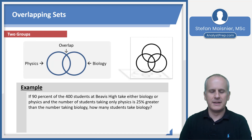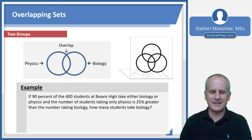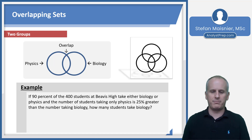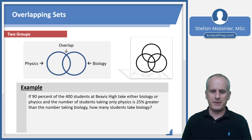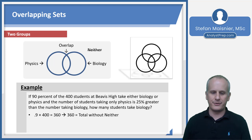Let's take a look at an example. If 90% of the 400 students at Beavis High take either biology or physics, and the number of students taking only physics is 25% greater than the number taking biology, how many students take biology? We've got physics on the left-hand side, the overlap in the middle, and biology on the right-hand side. They told us implicitly there are no neithers.